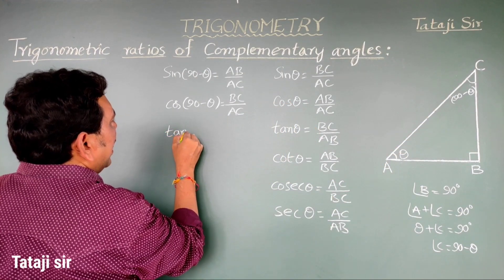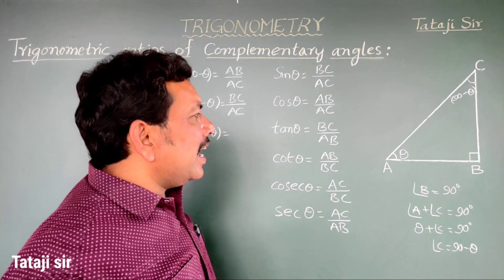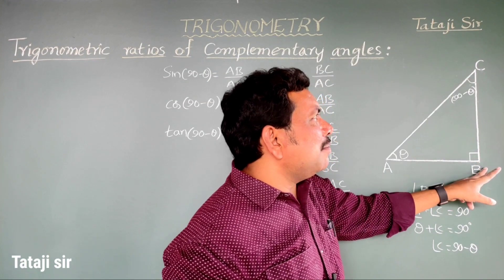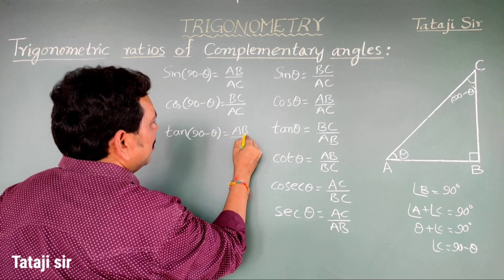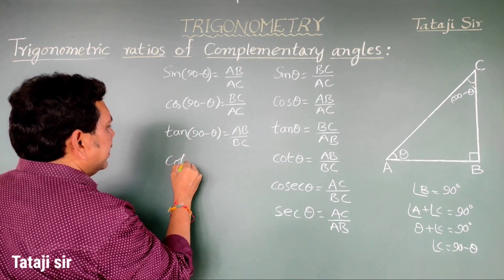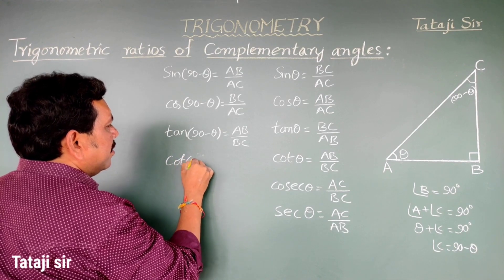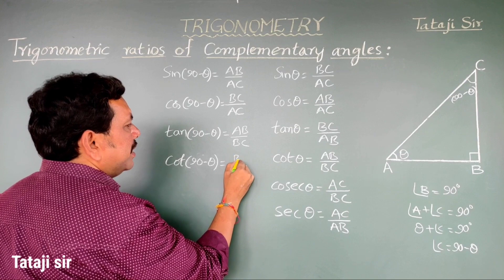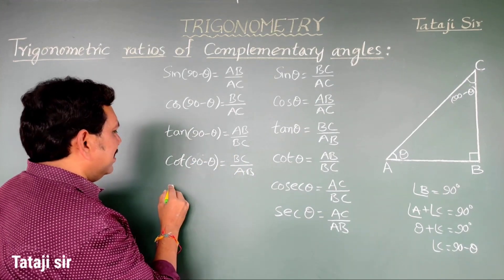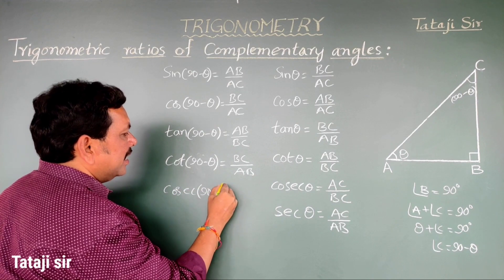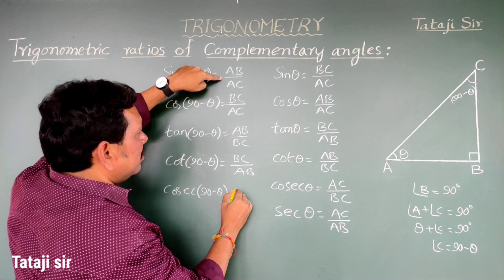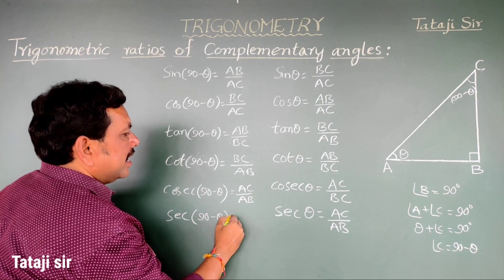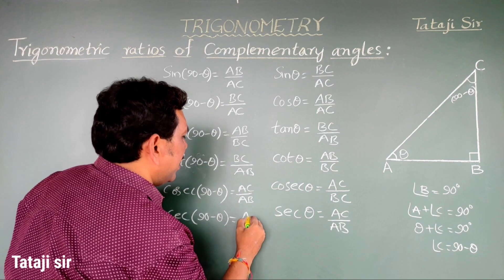Tan of 90 minus theta: opposite side by adjacent side equals AB by BC. Cot of 90 minus theta is the reciprocal of that, equals BC by AB. Cosecant of 90 minus theta equals AC by AB. Secant of 90 minus theta equals AC by BC.